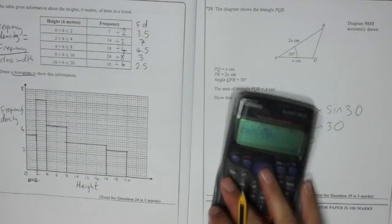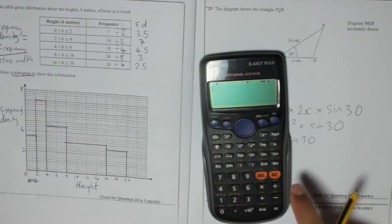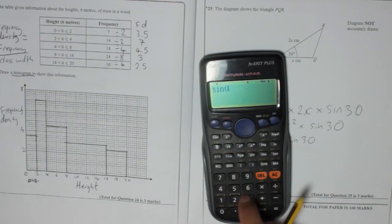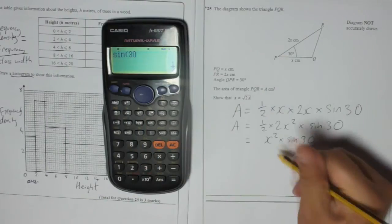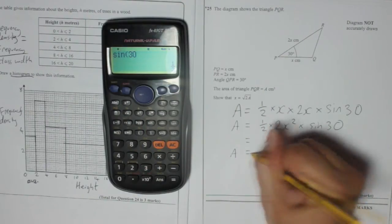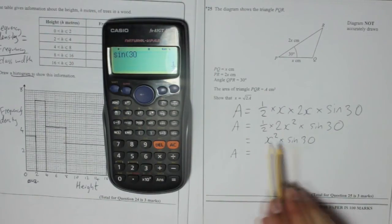Now, work out what sin 30 is, let's see what that is. Sin 30 is a half, so that means A is equal to half x squared.